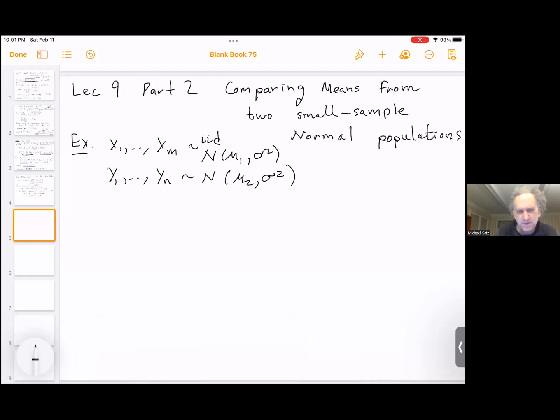Okay, so just do another example. This continues from the first part. So now we want to estimate mu1 minus mu2 for two different populations. But again, we are making the assumption that the populations themselves, not just the estimators, but the populations are normal here.